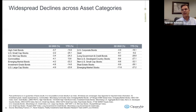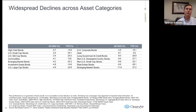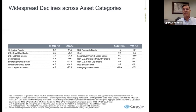Gold is down 9.2% year-to-date as of Q3. Several clients have asked about adding commodities or gold to the portfolio, but if we had done that last quarter, that would have been one of our worst performers. We haven't moved to do that, so that's not an issue, but again — widespread declines across asset categories.